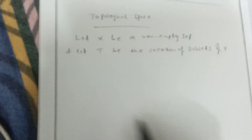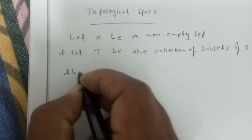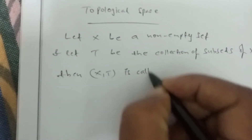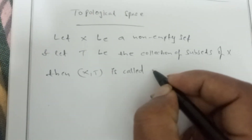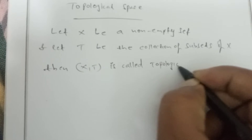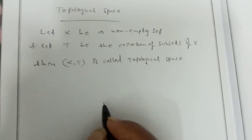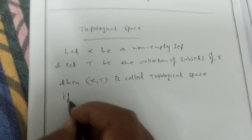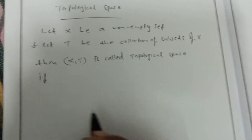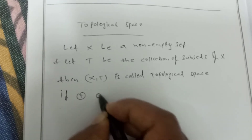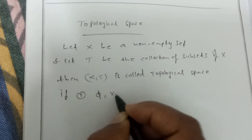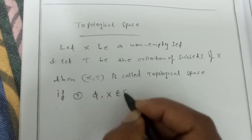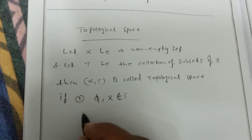Then the ordered pair (X, T) is called a topological space if: first condition — the empty set and X both belong to T.